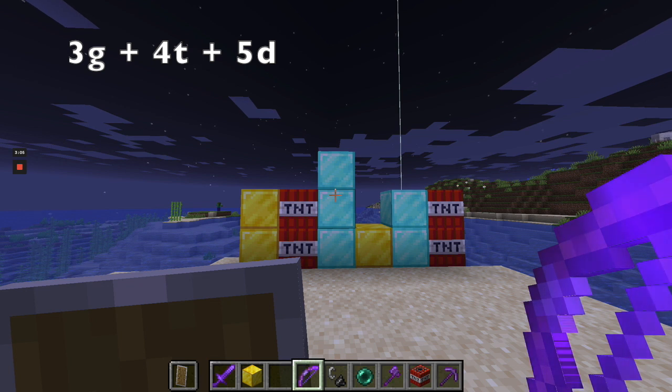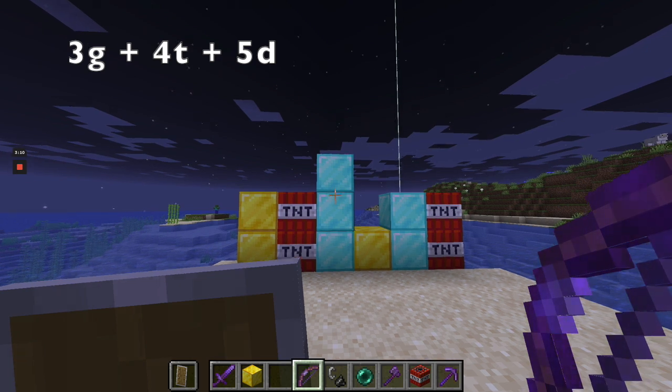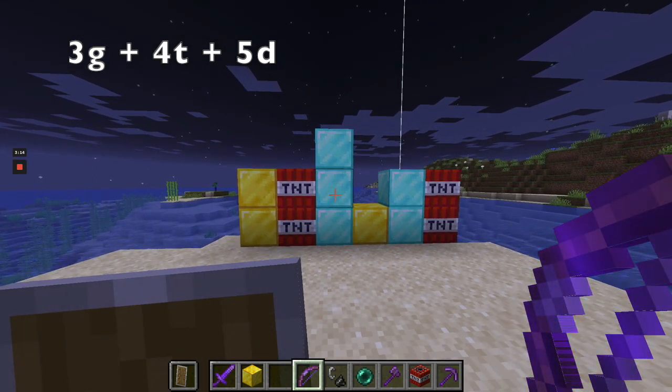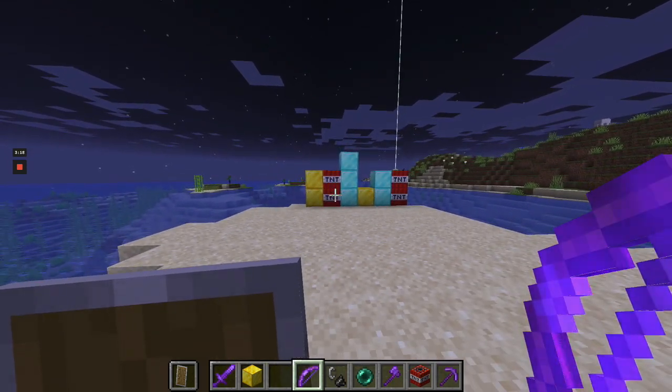Right, we would get 3 gold or 3G, 4 TNT, and 5 diamond. All right. Now what happens if I shoot a flaming arrow into the TNT? I wonder.